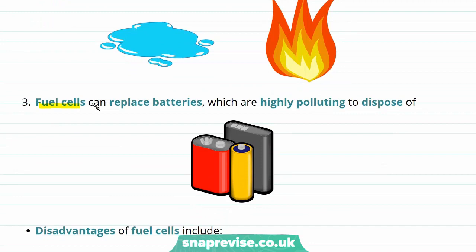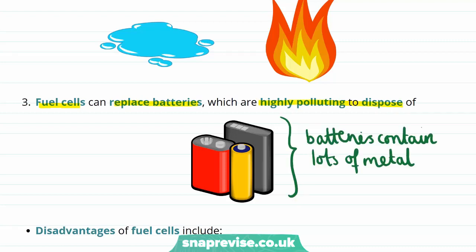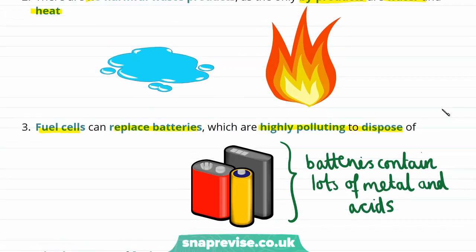Fuel cells can also replace traditional batteries. Traditional batteries are highly polluting to dispose of because they contain lots of metals such as cadmium, lead, and mercury, as well as acids, so they need to be disposed of carefully as these materials can affect the environment. Hydrogen-oxygen fuel cells are much better in this regard because they just contain hydrogen and oxygen and only produce water and heat.